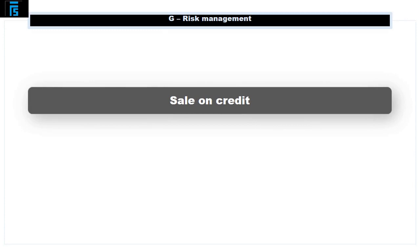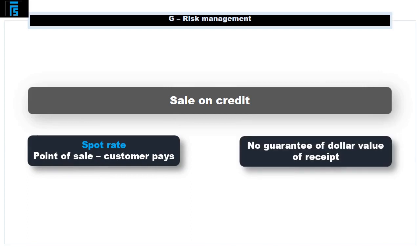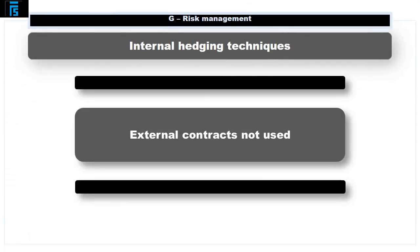If we made our sale on credit, the spot rate of exchange will probably move between the point of sale and when the customer pays, so we cannot guarantee what the dollar value of that receipt will be. Now let's consider ways of trying to remove our exposure to that fluctuating spot rate. There are some simple ideas, sometimes known as internal hedging techniques, so called because external contracts are not used.